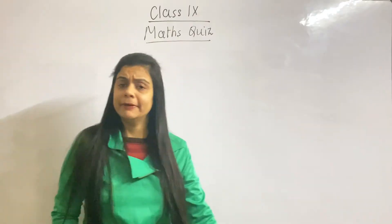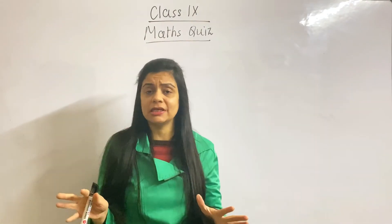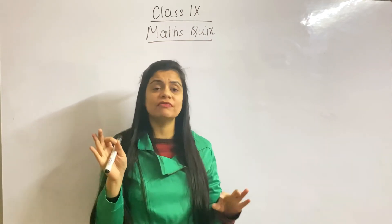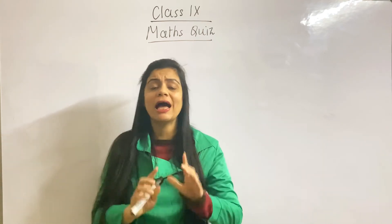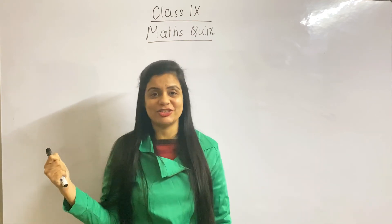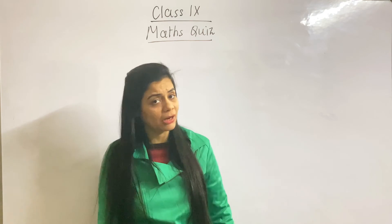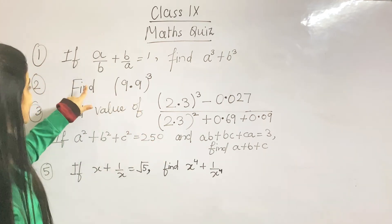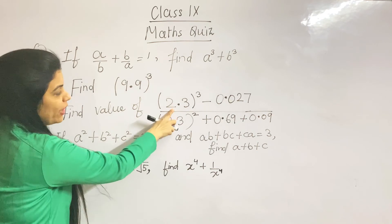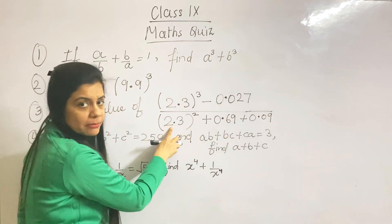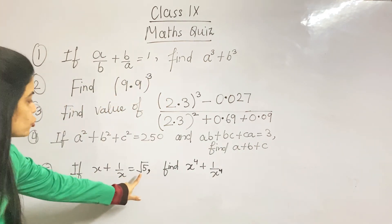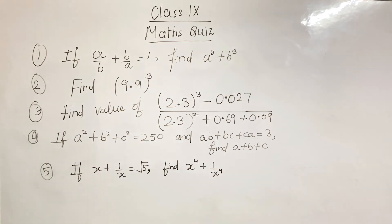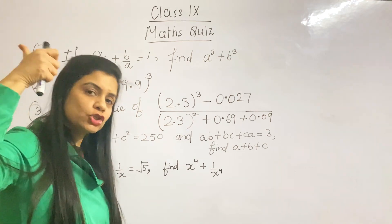Today's quiz — I am going to give you 5 questions, but take your time doing them carefully. Today all 5 questions will be based on chapter 2, which is Polynomials. You can pause the video and note down all 5 questions. Note the second question carefully: it has values 9.9, 2.3, 0.027 — all decimals — and also root 5 (square root 5). Start doing these 5 questions and give me your answers in the comment section. All the best. Bye!